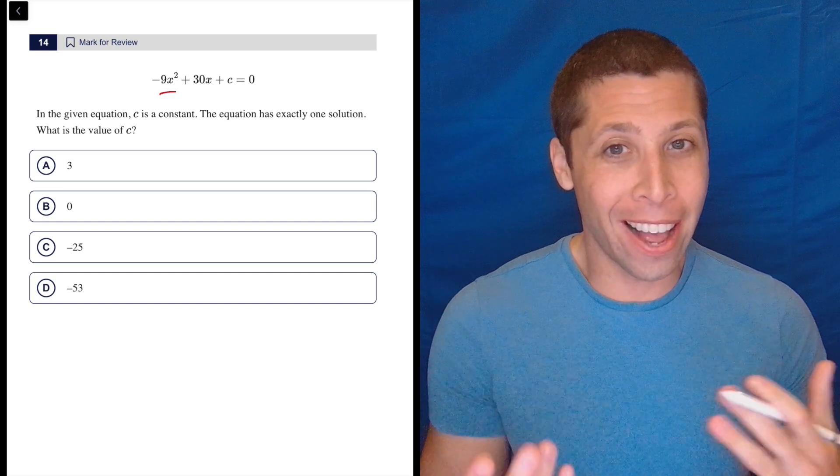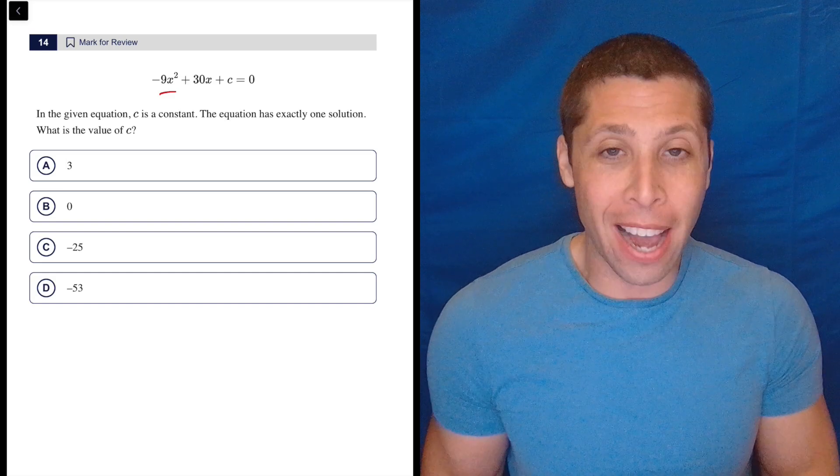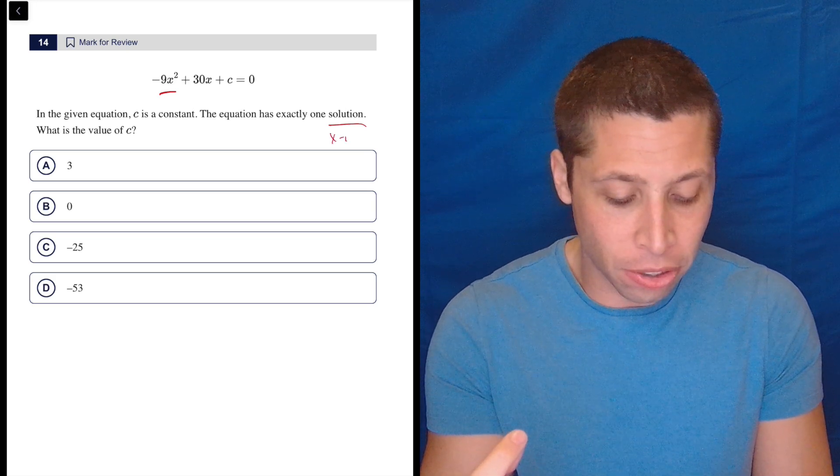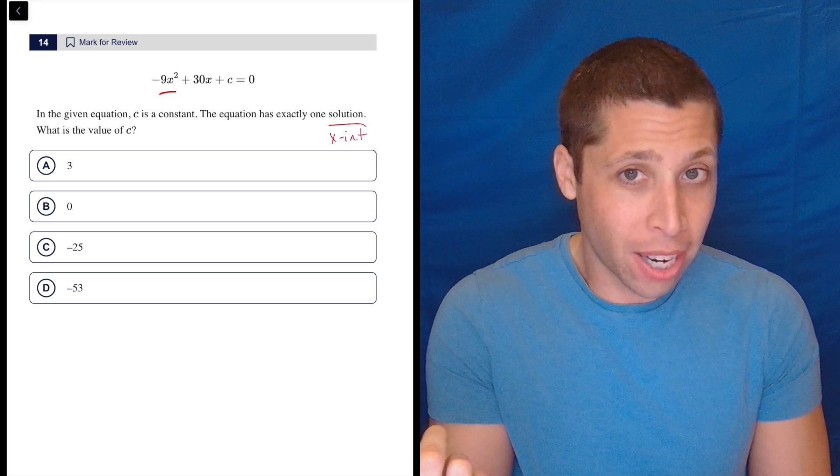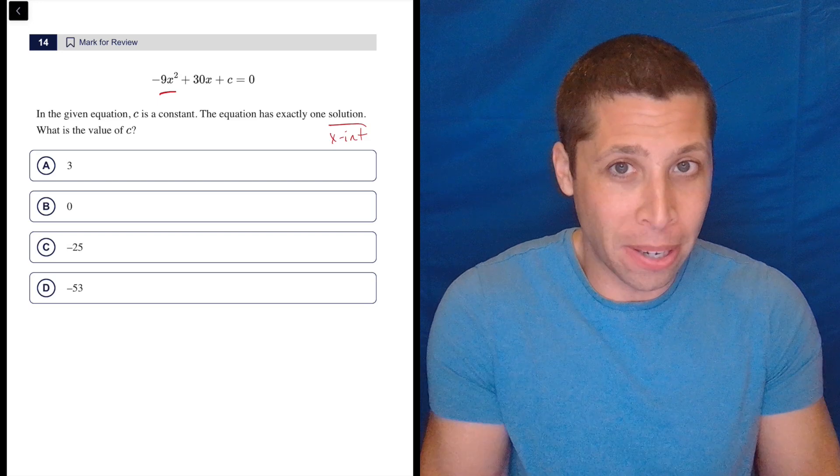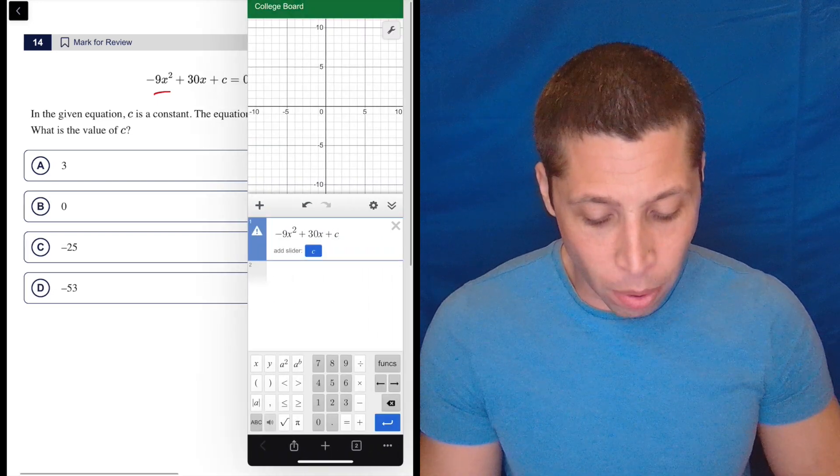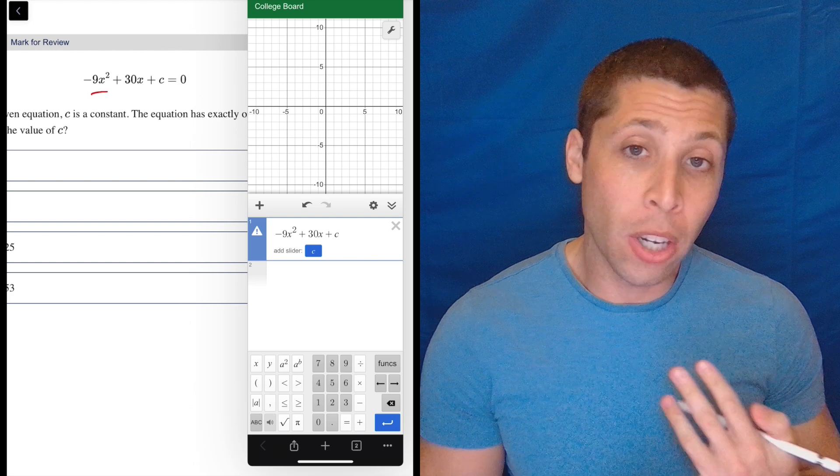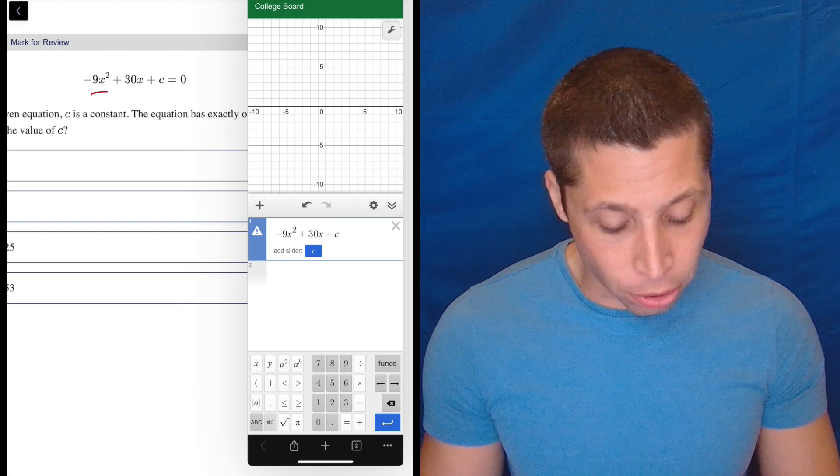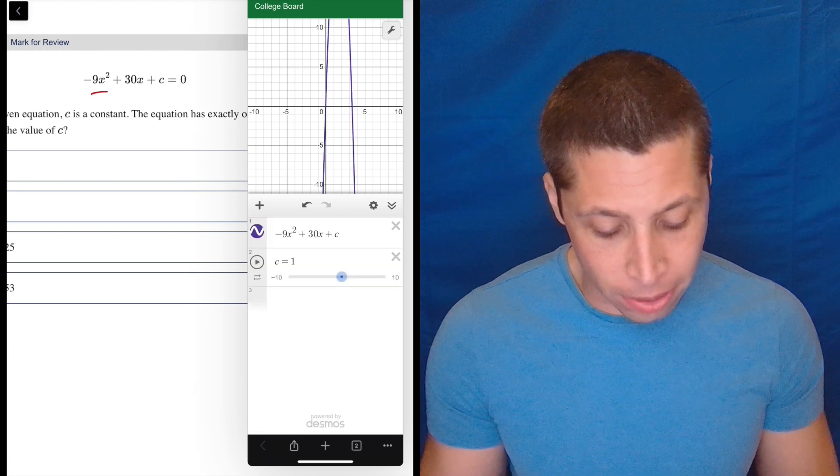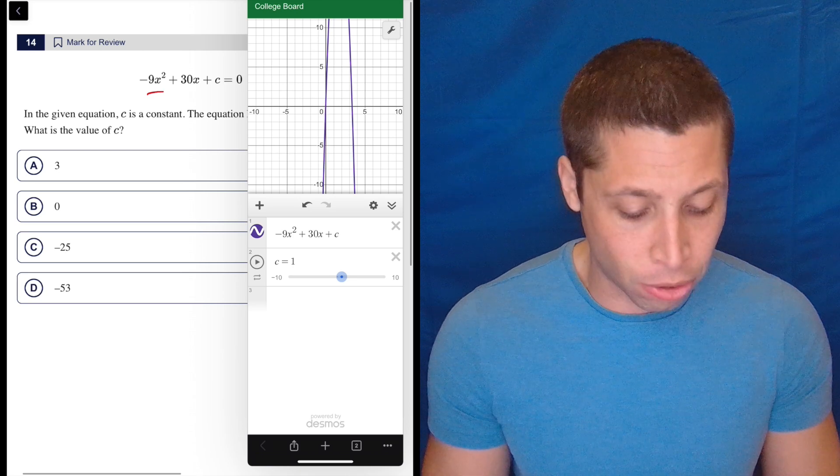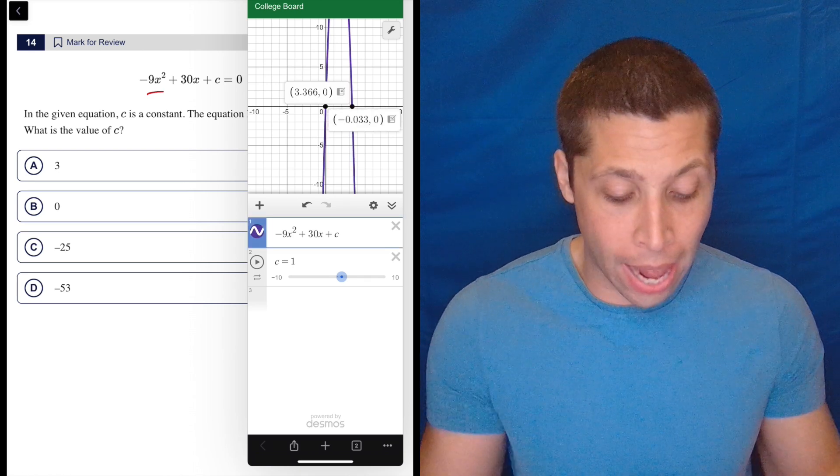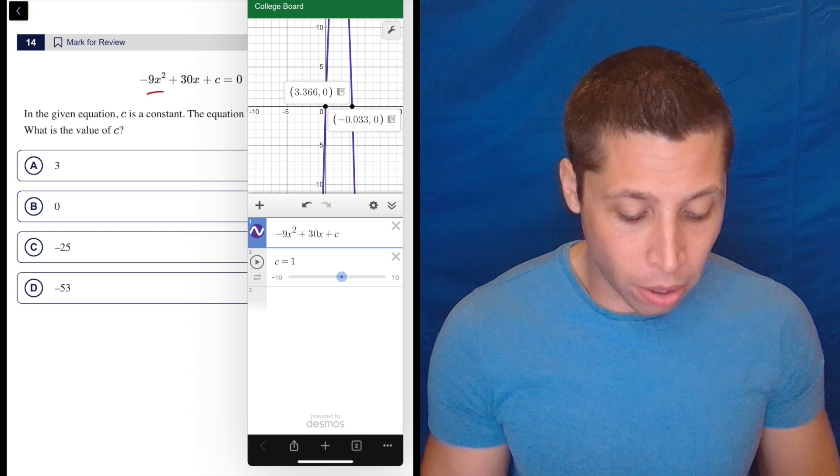Or I don't really need to because they gave me options. And a solution when we're looking at a single quadratic is really just an x-intercept. So I can just kind of guess and check this thing and see how many solutions it has by looking at it. So I already took the liberty of typing it in. But notice I'm leaving off the equals zero. But it also is offering me the slider. So I'm going to hit the C to get a slider. It's going to default to one, which isn't an answer anyway.